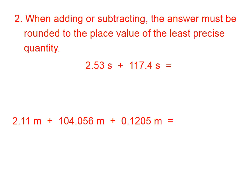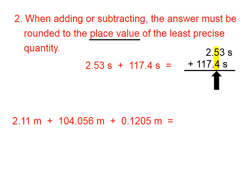When we're adding or subtracting, there's a different rule that applies. The answer must be rounded to the place value of the least precise quantity. In this first example, we have a quantity that is rounded to the hundredths place, and another quantity that's rounded to the tenths place. We are going to add these up on our calculator and round our answer to the tenths place, because the tenths place is less precise than the hundredths place.